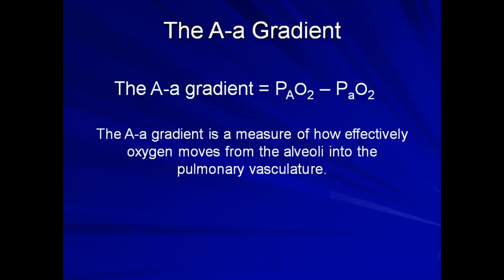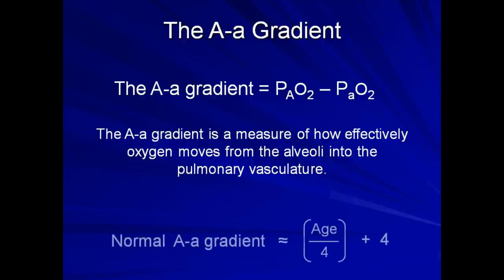A small gradient is actually normal and increases with age. There are several different equations used to estimate the normal gradient. The most common states that the normal AA gradient in mmHg is approximately equal to the age in years divided by 4 plus 4. Regardless of whether a patient is currently receiving mechanical ventilation, identification of an increased AA gradient begs the question: what's causing it?